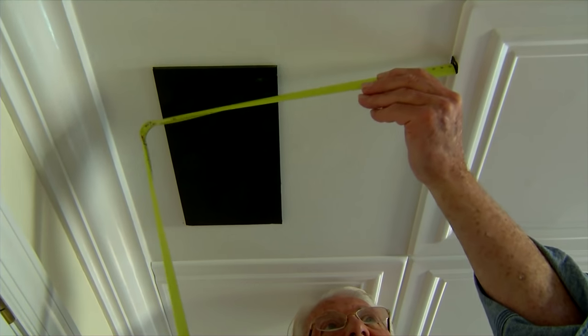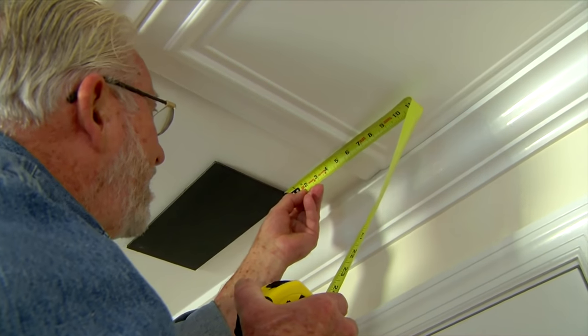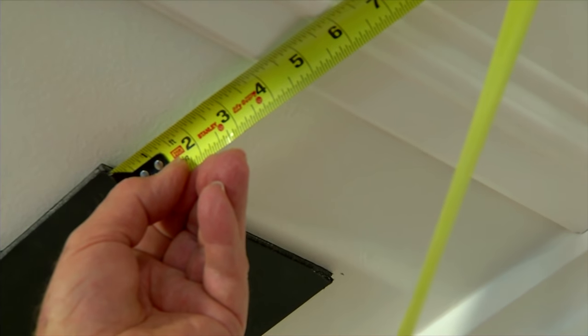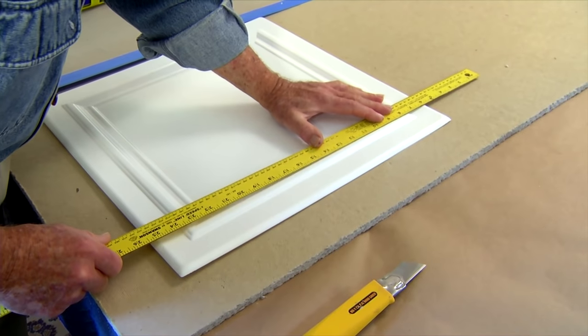There are a couple of ways to cut openings for air conditioning or heating ducts. One method is to measure the distance from adjacent tiles to the edges of the opening and transfer those measurements to a tile.